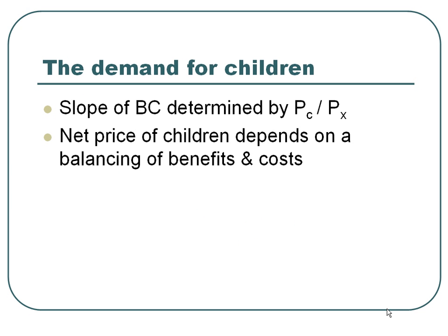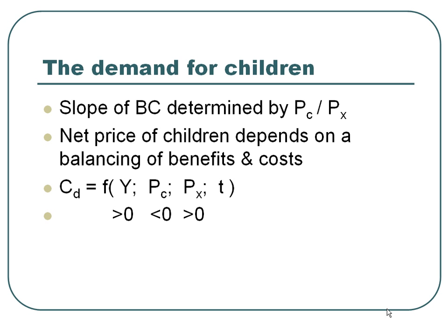So the net price of children depends on a balancing of benefits and costs of having children. We can characterise the demand for children as any other demand function — the number of children demanded depends upon income Y, PC the price of children, Px the price of other goods, and upon tastes or preferences. We can put signs on these variables. Here I've assumed that the income response is positive — in other words, this is assuming that children are a normal good.